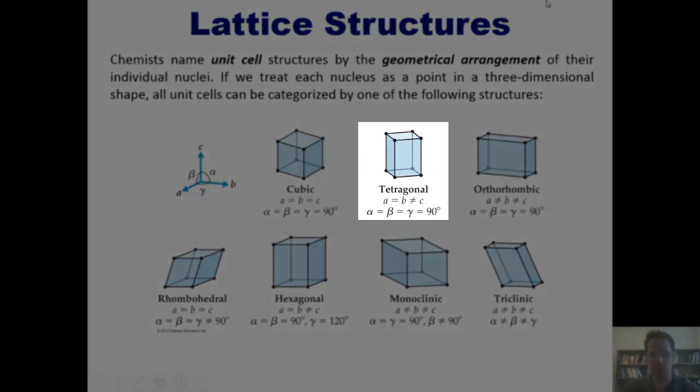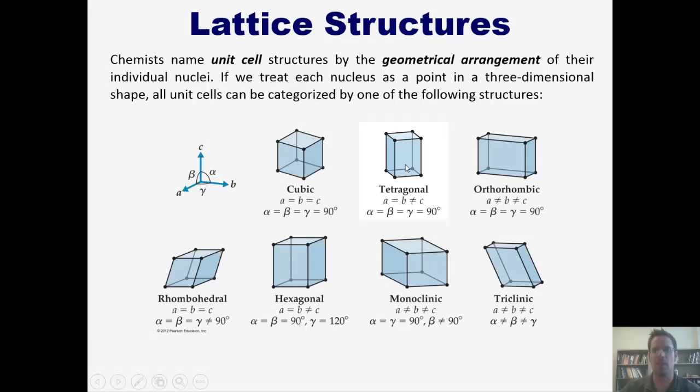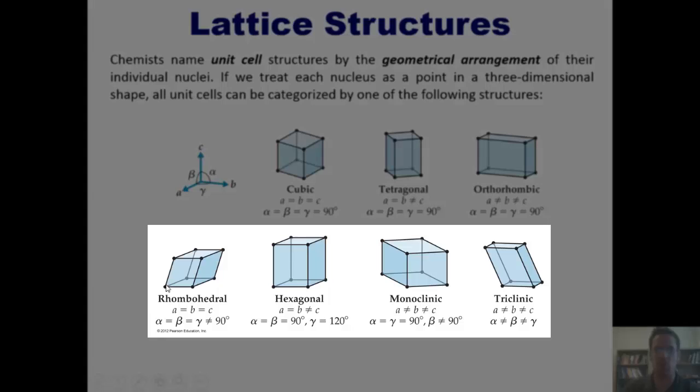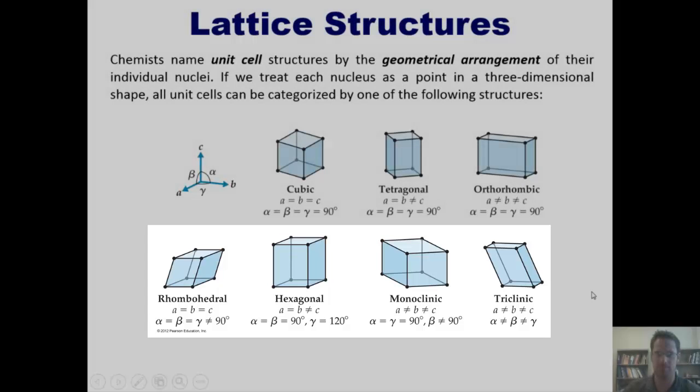If however one of the sides is longer than the other two, it's tetragonal. If none of the three sides are equal, then it's orthorhombic. Things get a little bit more exotic if you have angles that are not 90 degrees, as indicated by these types of unit cells down here. These are called crystal lattice or lattice structures.